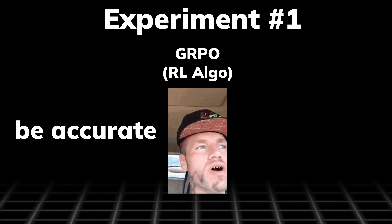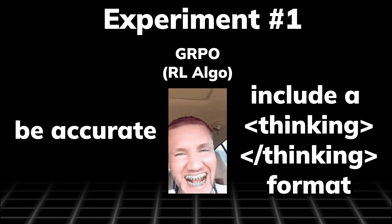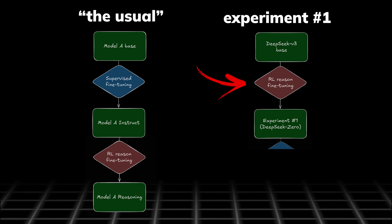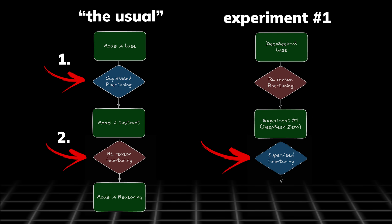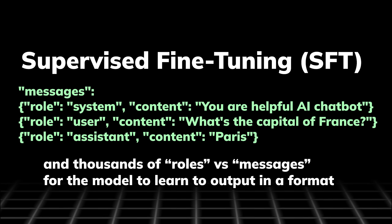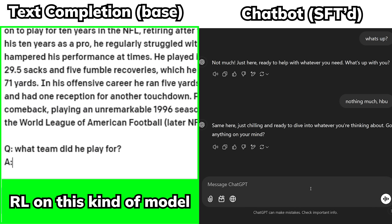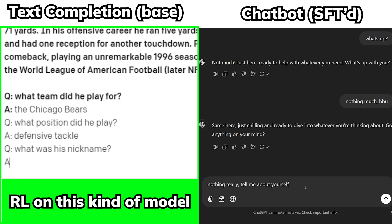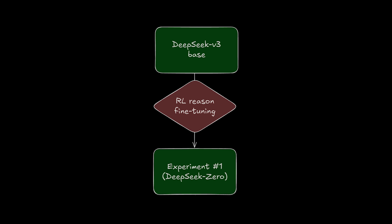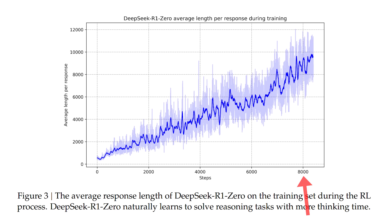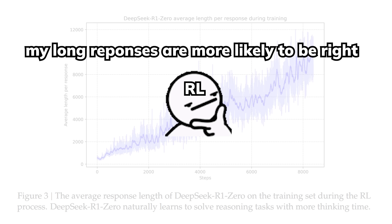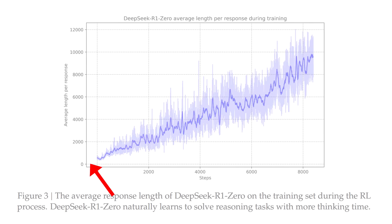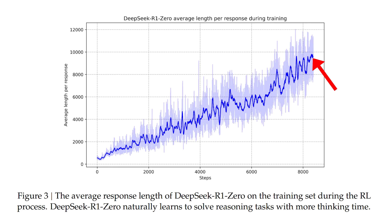In DeepSeek R1's initial experiment, their RL algorithm GRPO has only two main goals: be accurate, and follow the thinking tag structure. Contrary to standard practice, this RL is done before supervised fine-tuning, so they are doing RL on top of a base model that only knows text completion. This simple setup brought RL to its fullest potential — throughout training, the model realized that longer responses yield higher accuracy, so it slowly reinforced itself to generate longer responses.